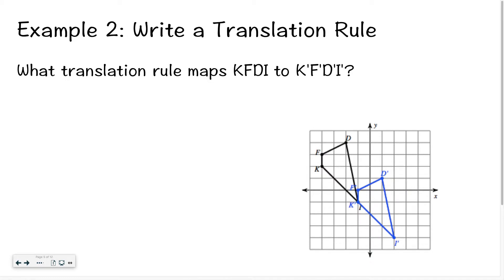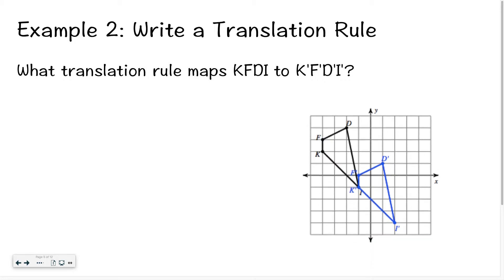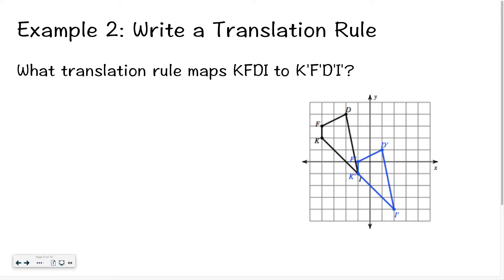Let's look at example 2. We want to write a translation rule. What is the translation rule that maps KFDI to K'F'D'I'? I want to look and see how this has moved. Let's start with K. There's K as the blue dot, and then the purple dot is K prime. I want to know how did I move from the blue dot to the purple dot. We always start with our X movements. I'm moving 1, 2, 3 to the right, and 3 to the right means that I'm going to do a positive 3. Then I'm moving down, so I know this is going to be a negative number. I move down 1, 2, 3 units.